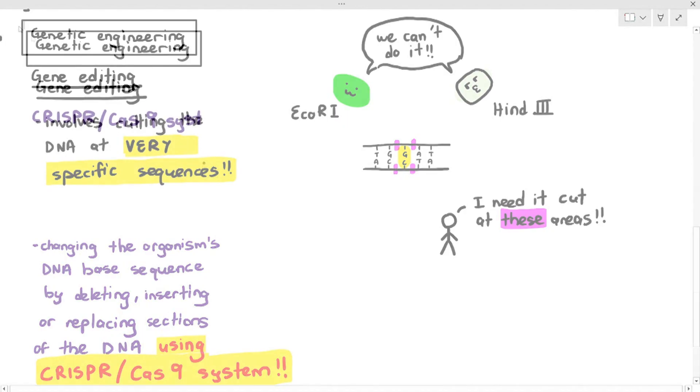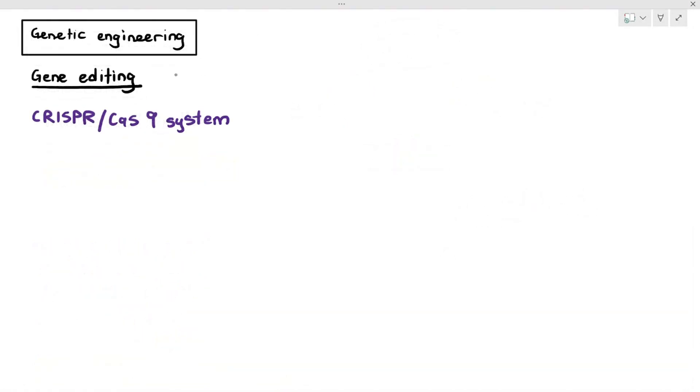Now, what you have to know about the CRISPR-Cas9 system is the fact that this particular technology is made out of two components, the Cas9 enzyme and also something known as the guide RNA, gRNA, by the way. Okay, so let's talk about it.